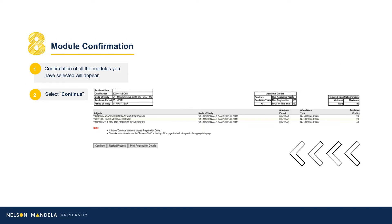Step 8 — Module Confirmation: Step 8 provides a visual reflection of the modules selected in the previous step and their details. Please double-check that what reflects on your screen is what is required from the Curriculum Qualification document. Further details regarding each module are provided: the campus on which the module is offered, the semester in which it will occur, whether the module is examinable, and the credit value. If satisfied, click Continue; or click Restart Process to make amendments.